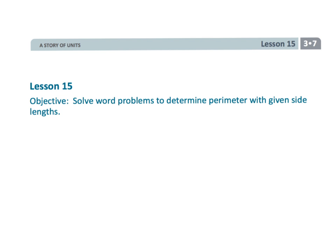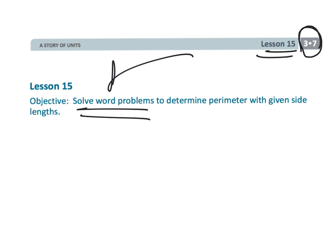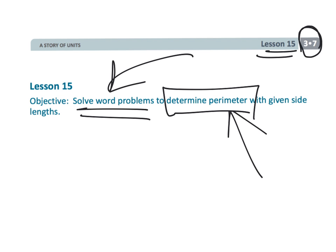And that wraps up grade 3 module 7 lesson 15 — solving word problems to really nail down the meaning of perimeter.